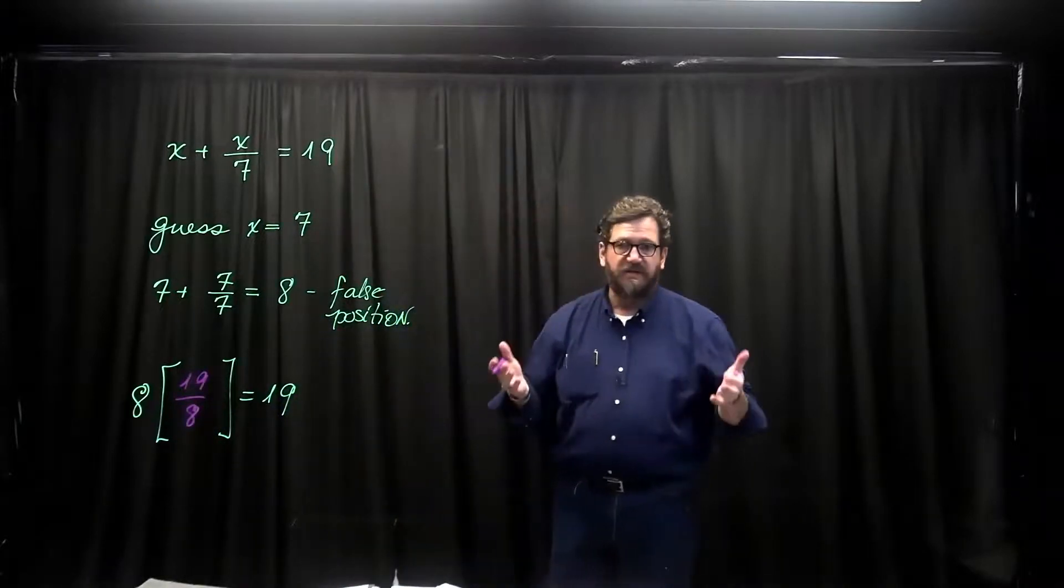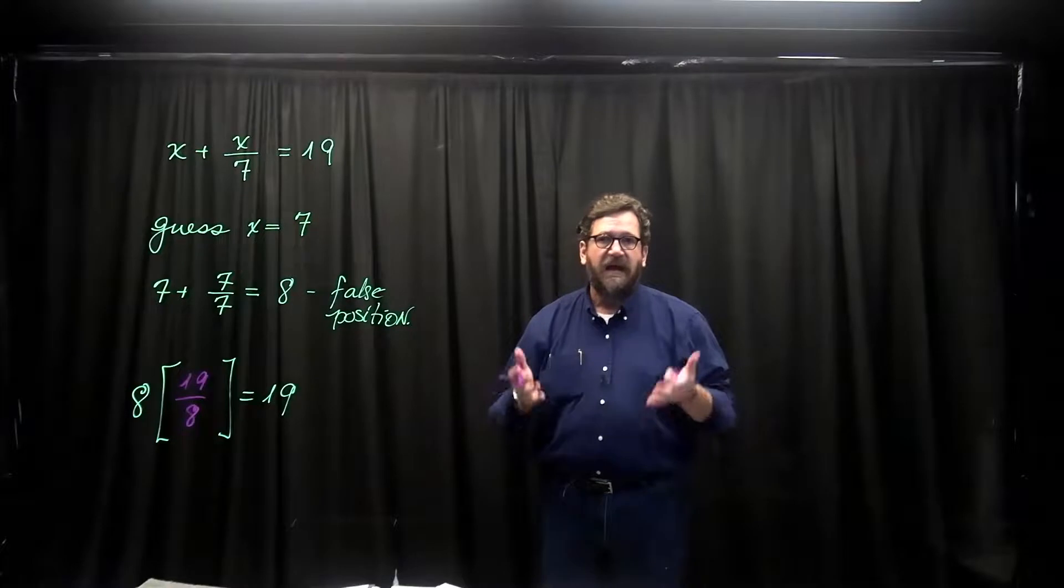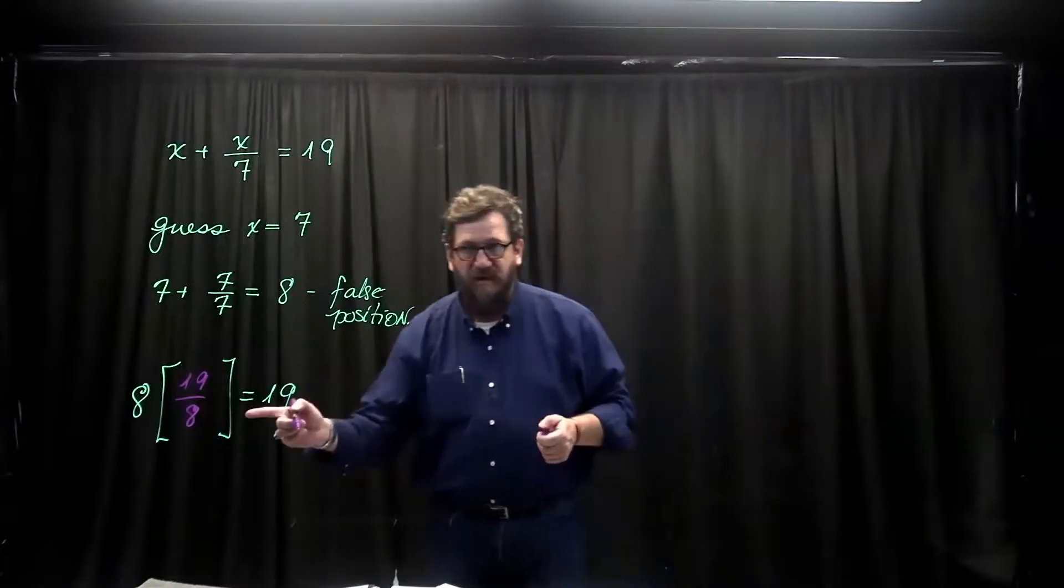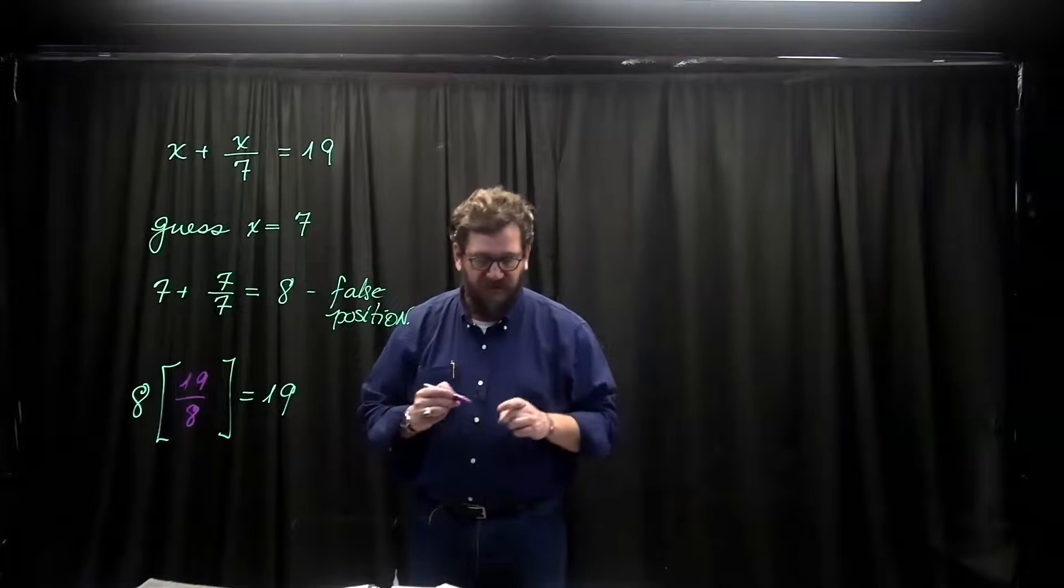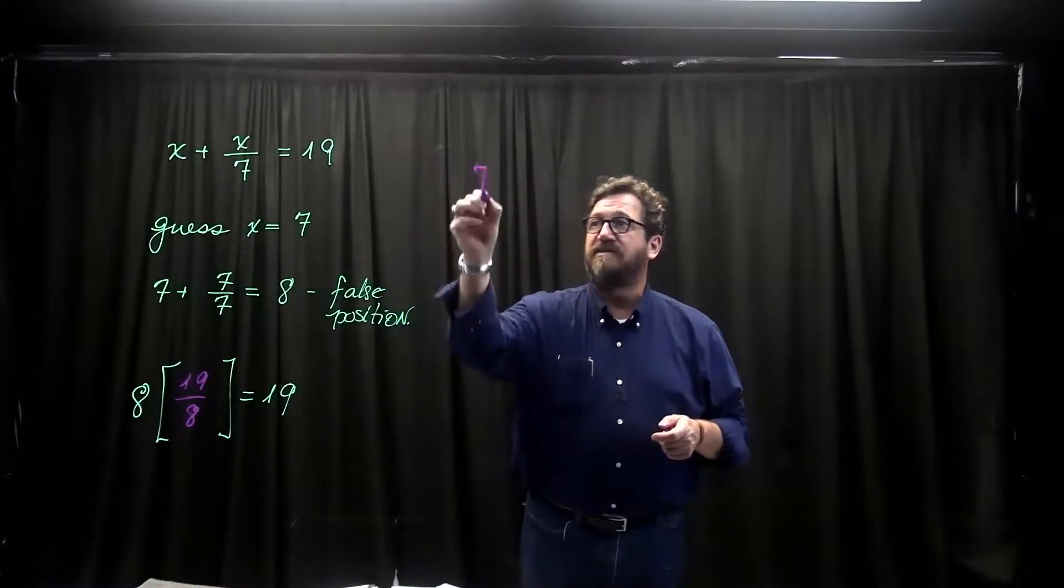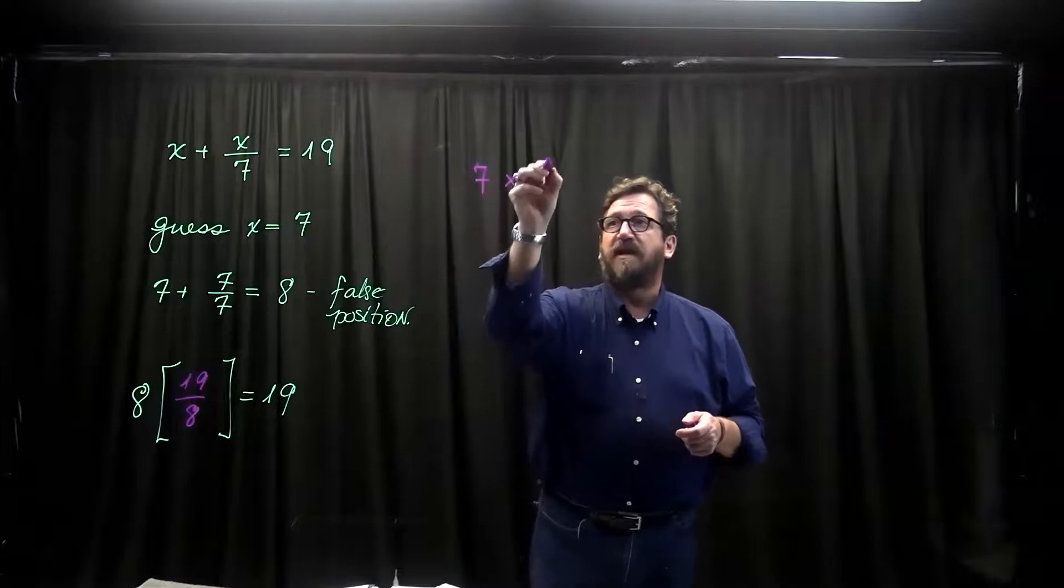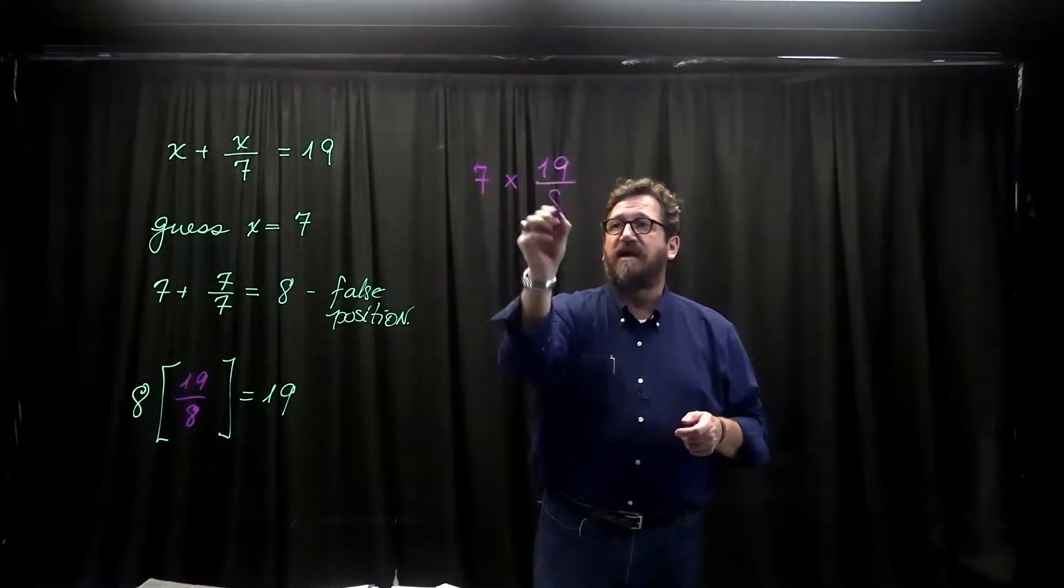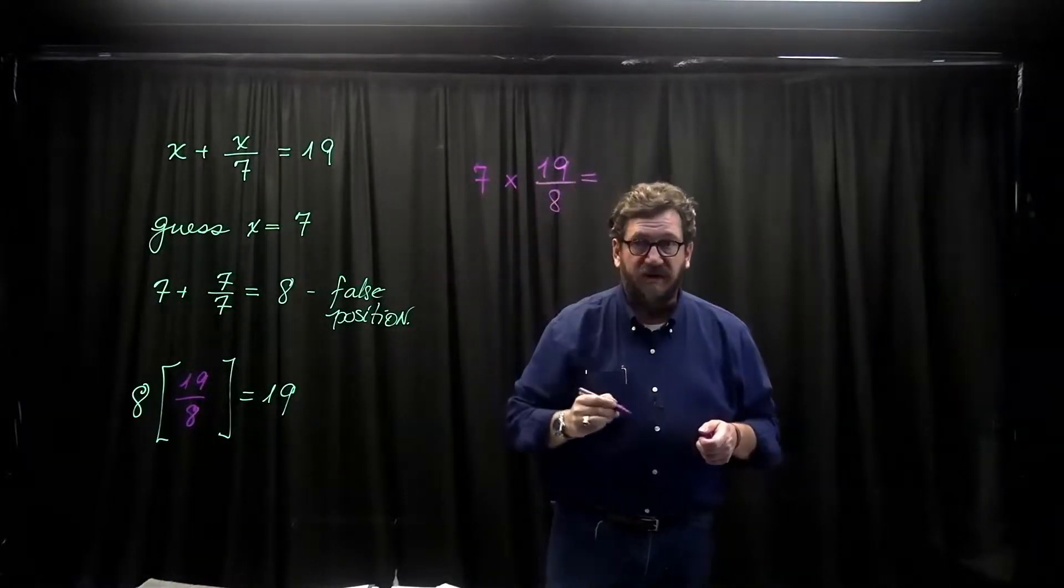And you think to yourself that's fine and dandy. How does that help us? Well it's this number 19 over 8 that I'm interested in. Because I'm now going to take my guess 7, I'm going to multiply it by 19 over 8, and we're going to see what we get out of this.